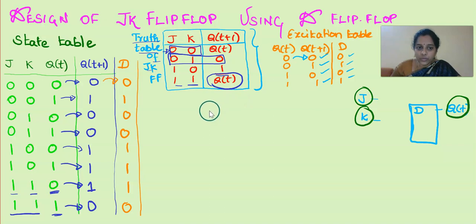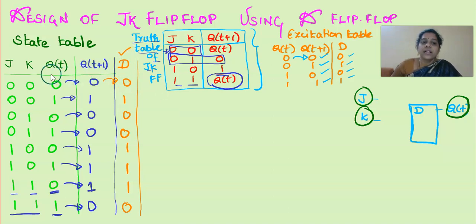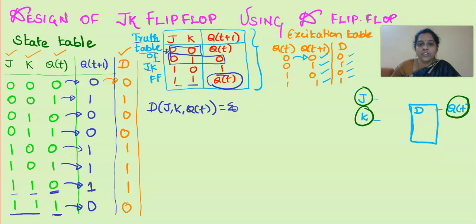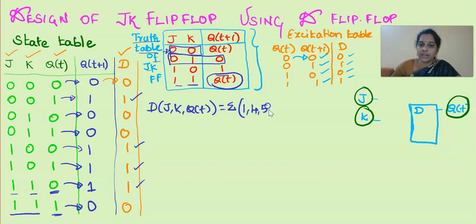Now what we need to do is find the input equation for D. The input for D is decided by three variables: J, K, and Q(T). So we need to go for a three-variable K-map to find the expression for D. It is a combinational circuit in which D depends upon J, K, and Q(T). In this problem, D equals sigma of minterms 1, 4, 5, and 6.